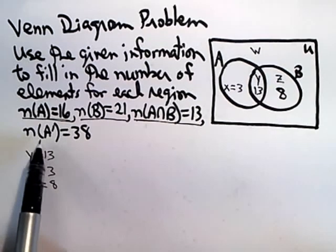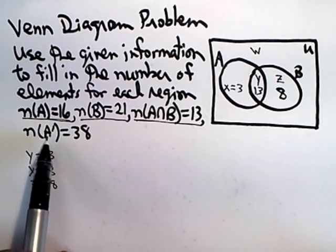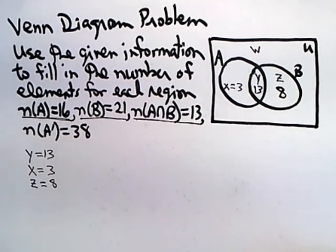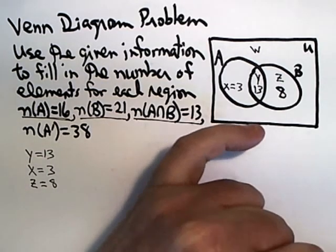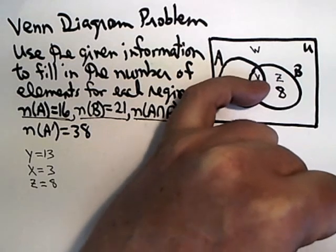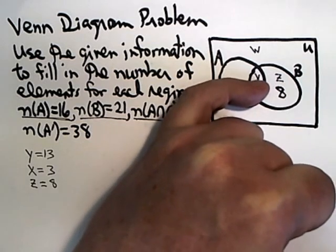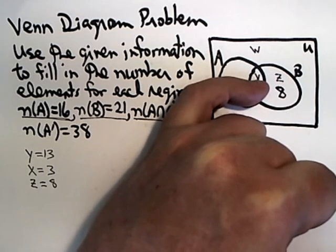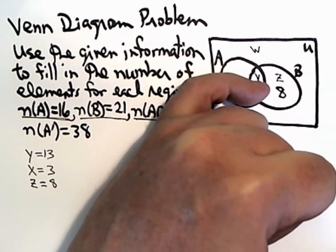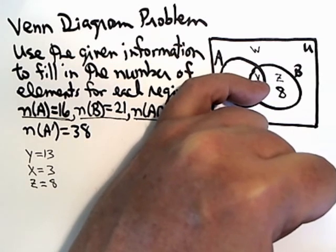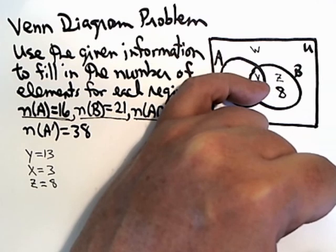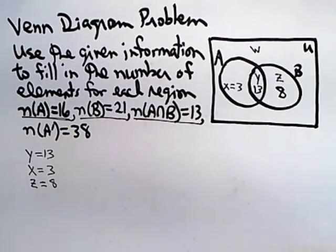The only piece of information we haven't used is the fact that the number of elements not inside of circle A is 38. In order to figure out what that is, we've got to cover up the elements that are in A, and everything else has to add up to 38. I've covered up the things that are in A, so that means W plus 8 has to be 38. So W is 30.